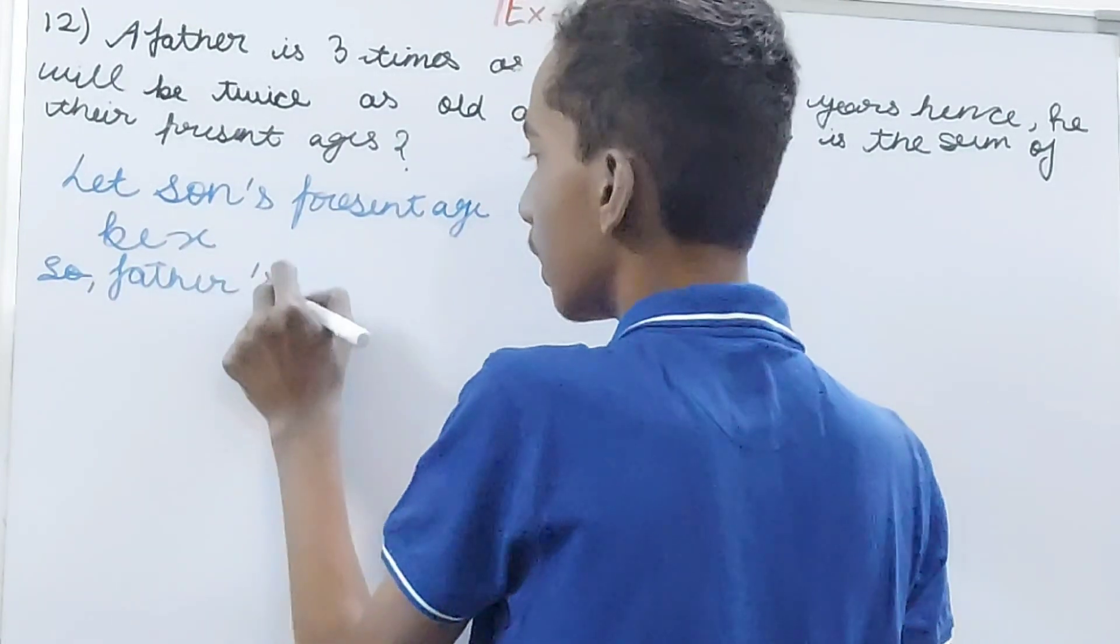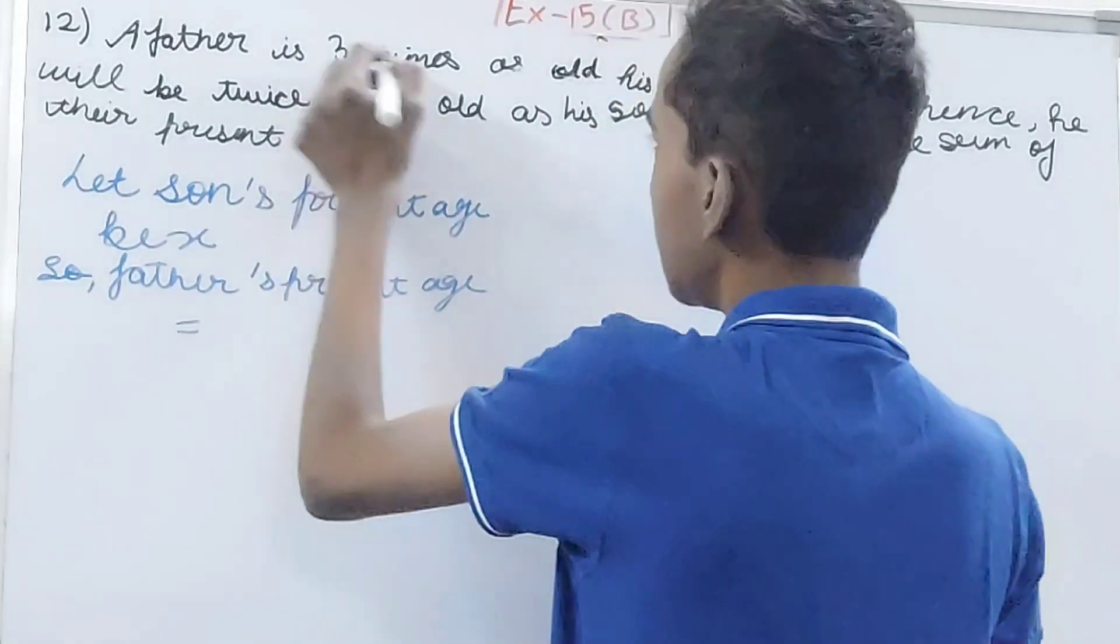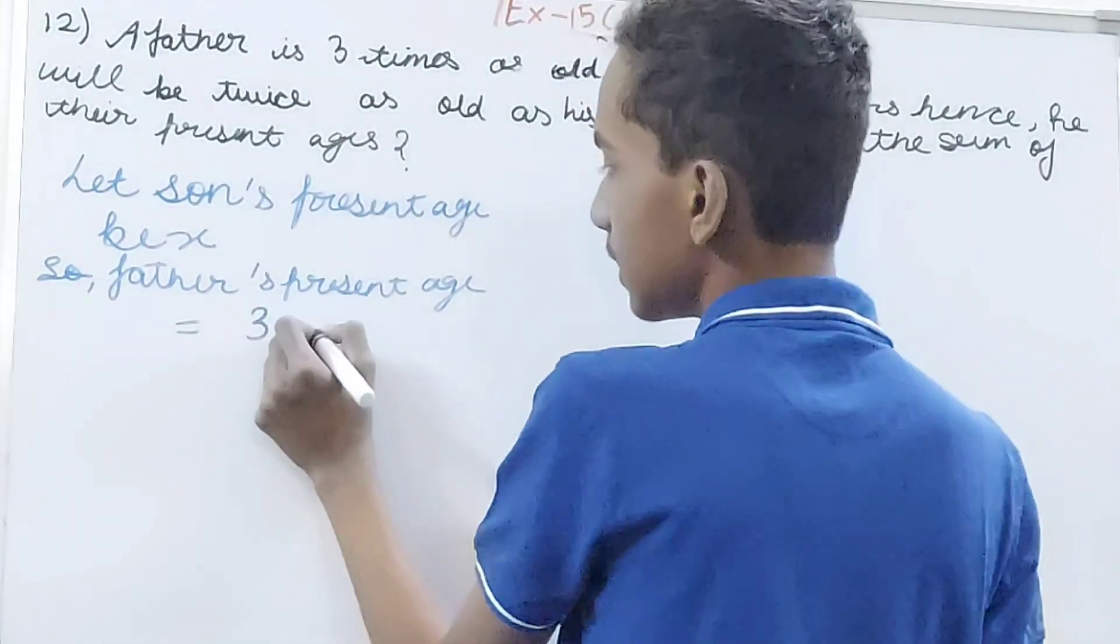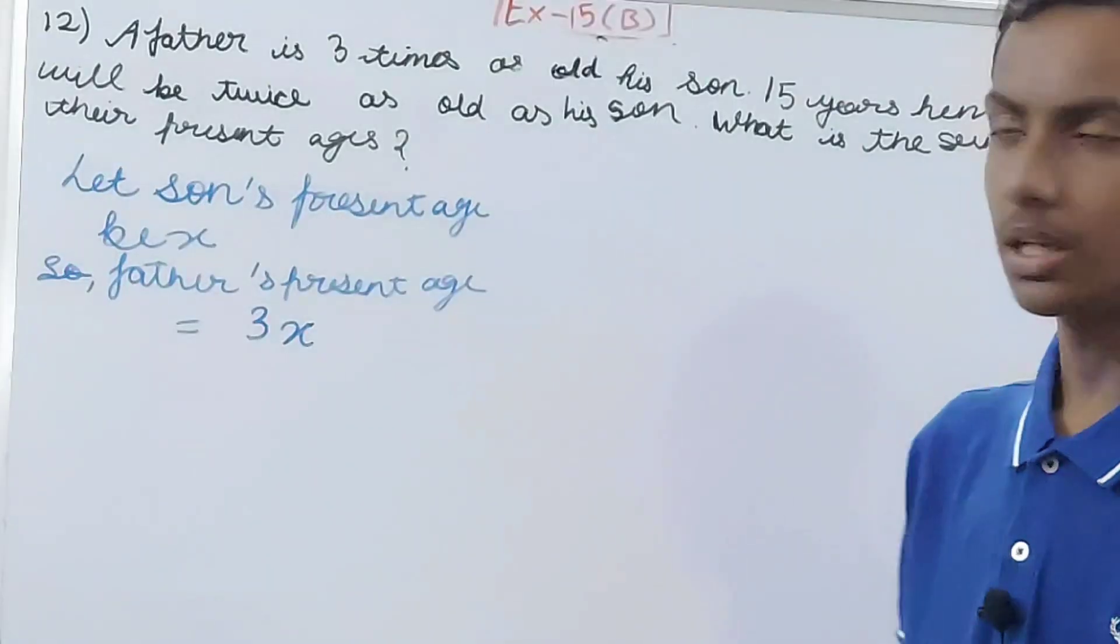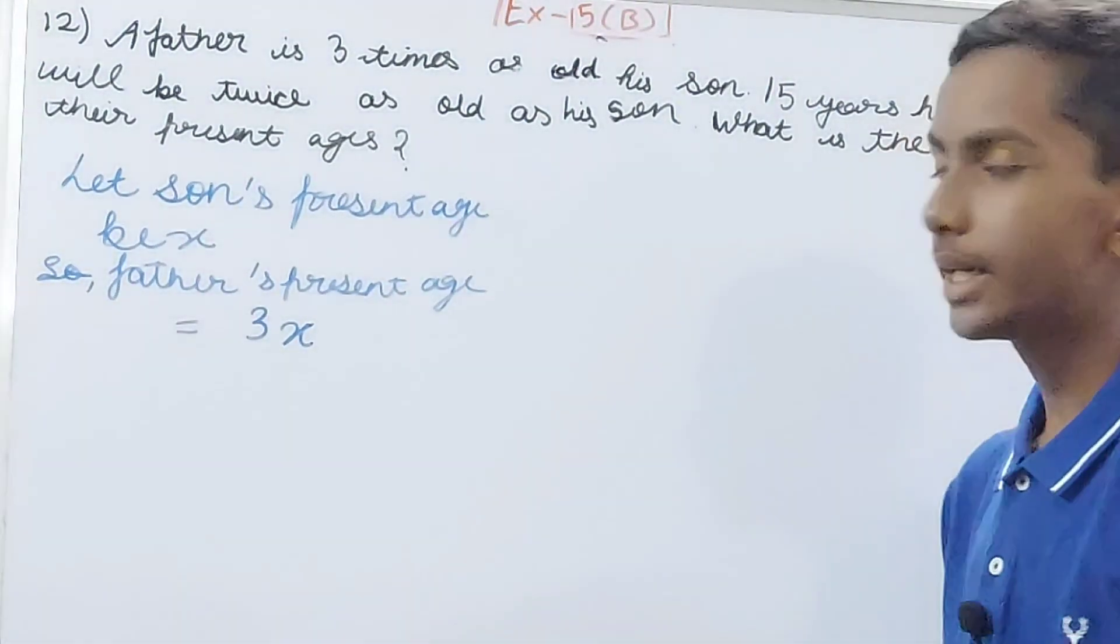Father's present age will be 3x, three times as old as his son. The question asks what is the sum of their present ages, but it also says 15 years hence he will be twice as old as his son.